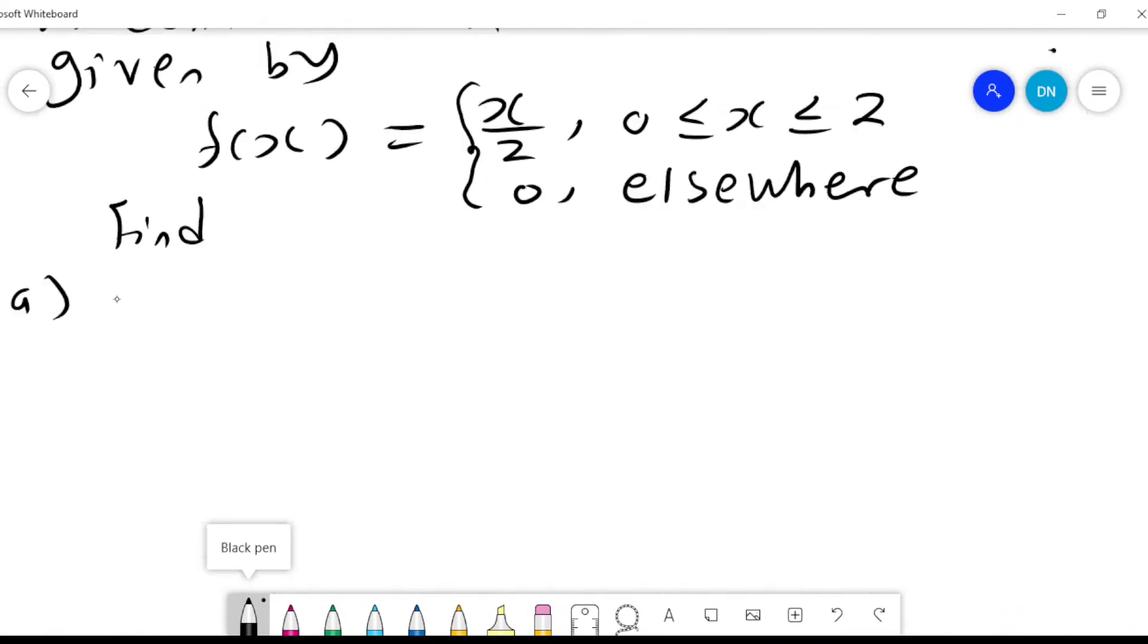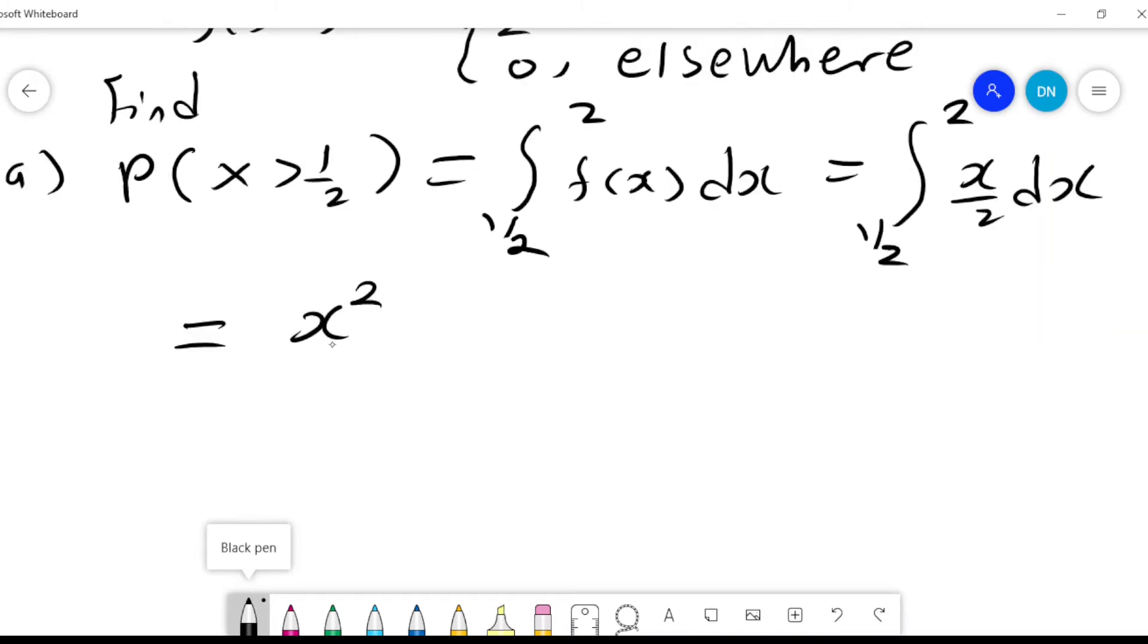And the first one is we want to find the probability of X greater than a half, which will be basically the integral from a half to 2 of f(x) dx, which is the integral of x over 2 dx, and x squared over 4 from 0.5 to 2.